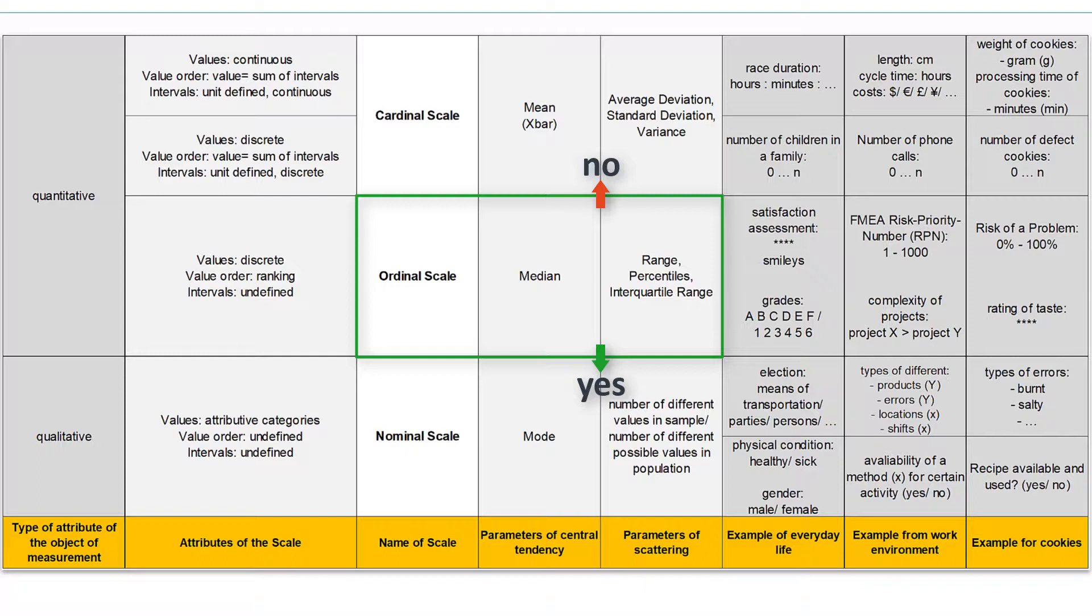Nevertheless, this is often done, and we will do it later. I have added a few more examples from the work environment, everyday life, and for the bakery. Frequently used are for example the defect types at nominal scale level and the cycle time or delivery time of the cookies on the cardinal scale.